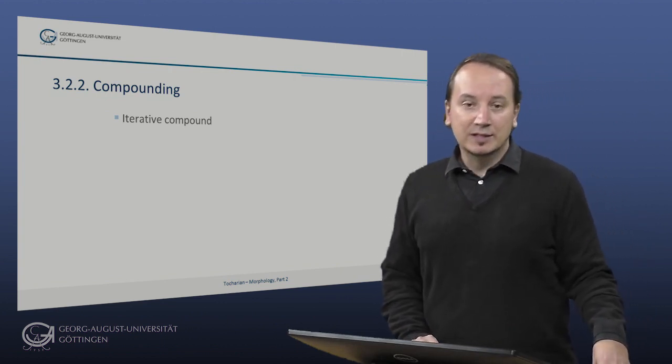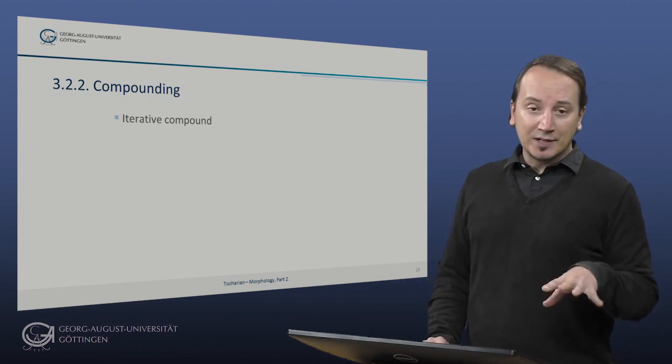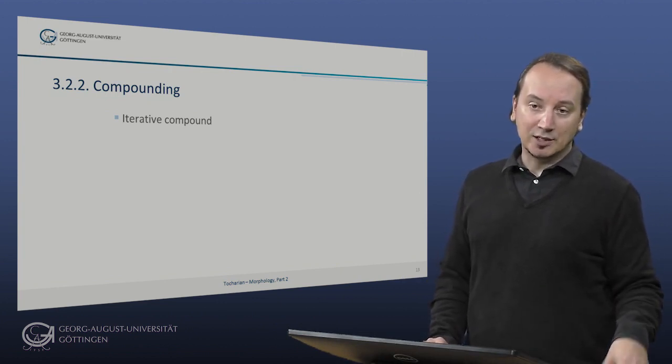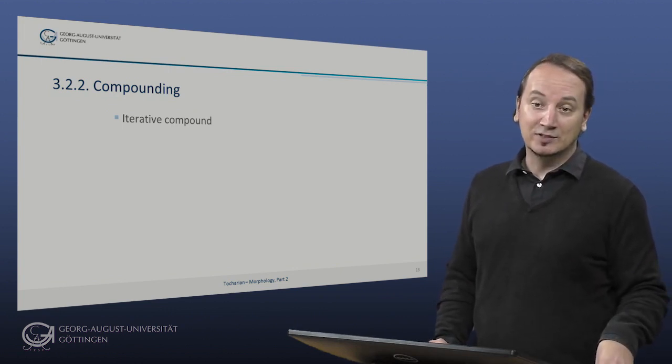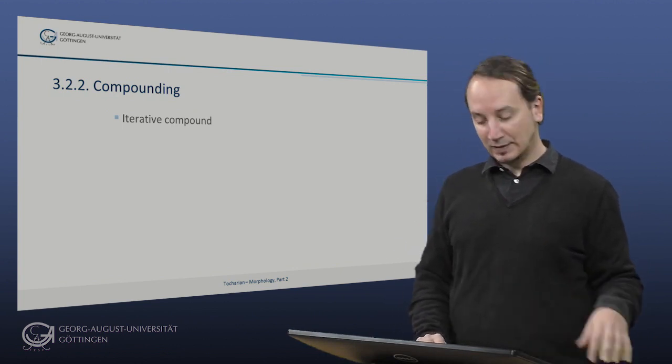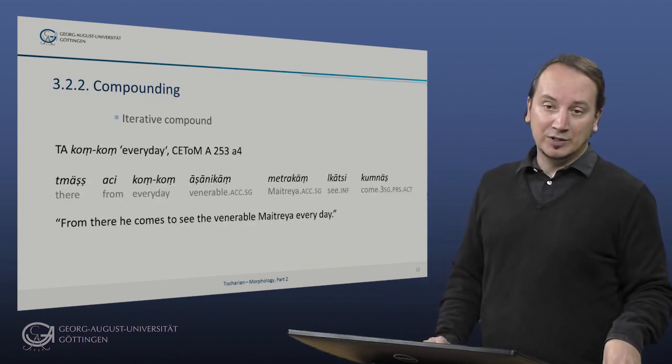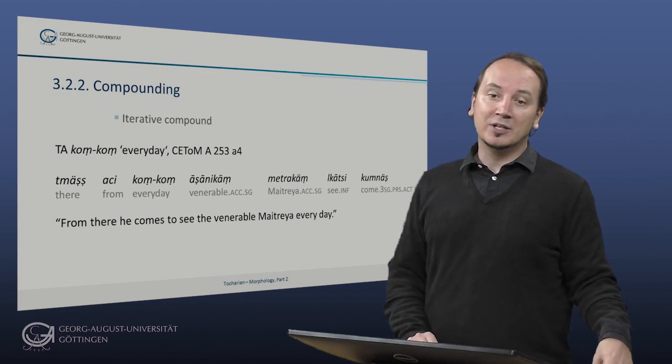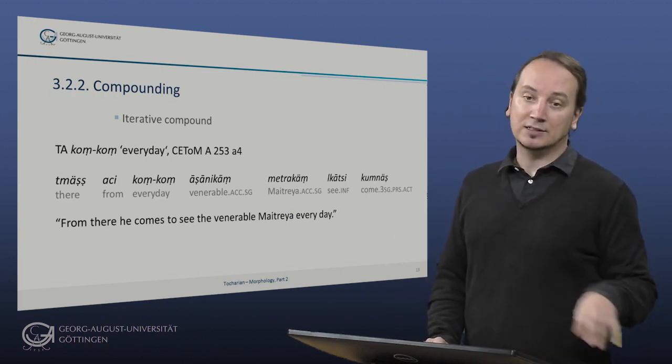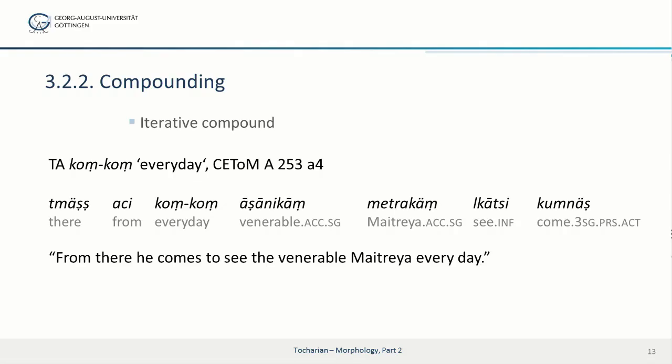Finally, we are looking at iterative compound. This type consists of two constituents that are basically the same. Famous examples from Vedic Sanskrit, for example, include Diwe Diwe, meaning daily, every day. And we also have an equivalent of this in Tocharian A, namely Kon Kon, meaning every day or daily. Our passage here again comes from the Maitreya Samitinathaka. From there he comes to see the venerable Maitreya every day. Kon Kon.